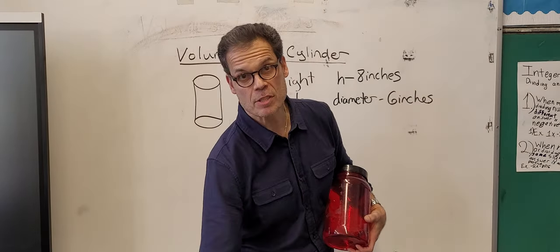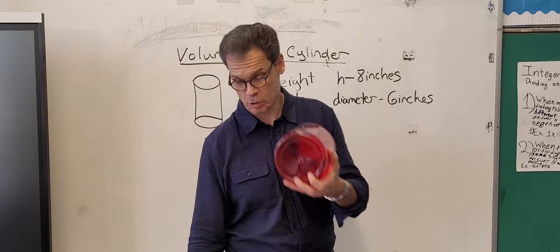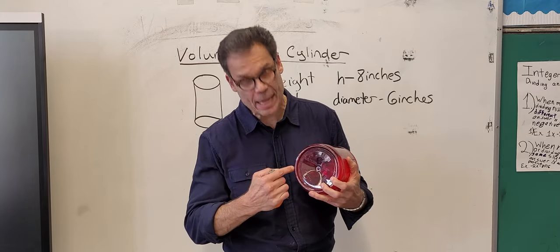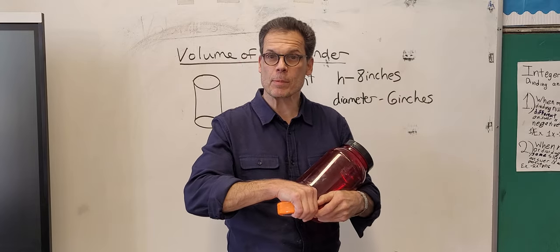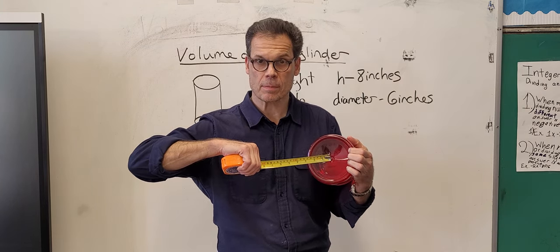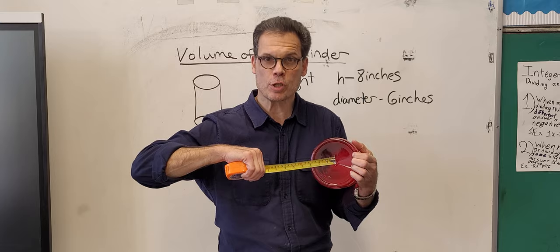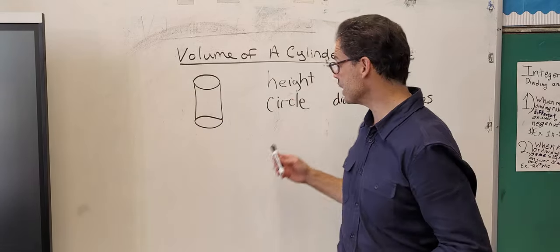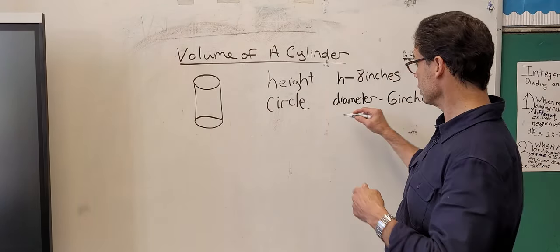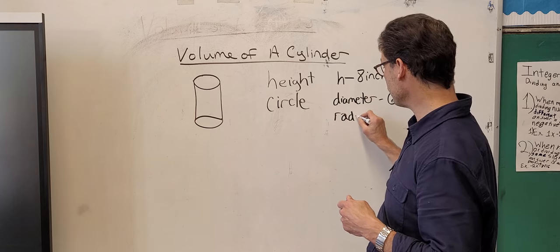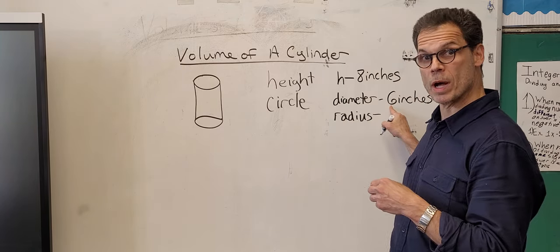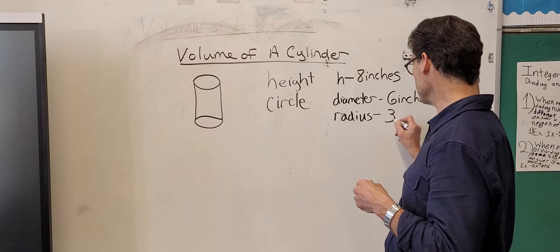The radius of this circle is half the distance across. It's half the distance of the diameter. It's from the edge to the middle. But I don't have to measure that because I have the diameter. The radius distance is half the distance of the diameter. Well if the diameter is six, one half of six is three inches.